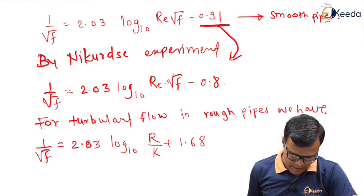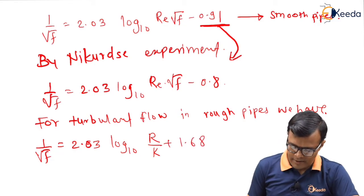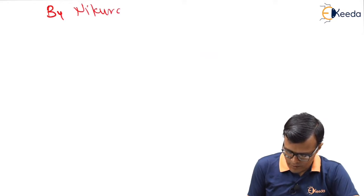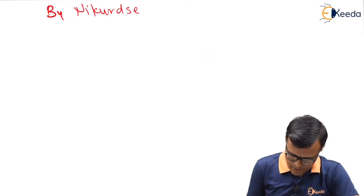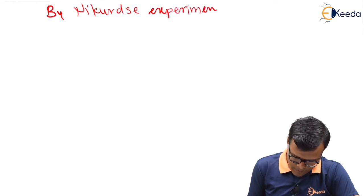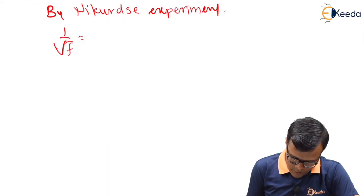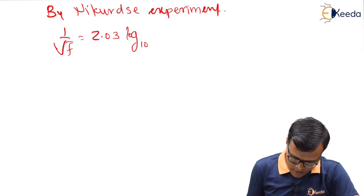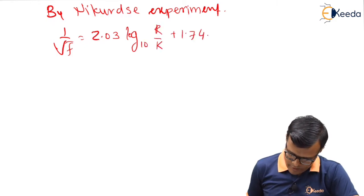1 upon root f is equal to 2.03 log to the base 10 capital R upon capital K plus 1.68. And by Nikuradse principle,